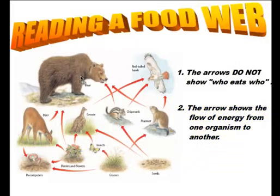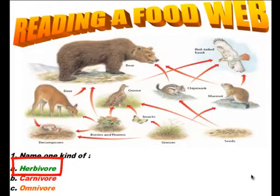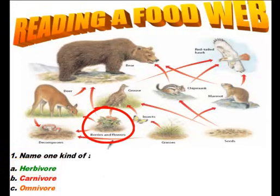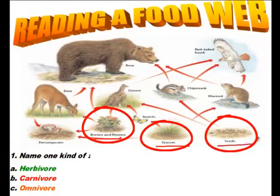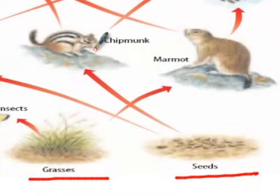Questions you might be asked include identifying an herbivore, carnivore, or omnivore from the food web. Remember what each consumer eats and start from there. Herbivores eat plants, so focus on the berries, flowers, grasses, and seeds. Find where arrows flow from the plants. Seeds have an arrow flowing to the chipmunk, and no other arrows point at the chipmunk, so its only food source is seeds — making it an herbivore. The grasses have arrows flowing to the insects, and the insects have no other food source, making them an herbivore too.